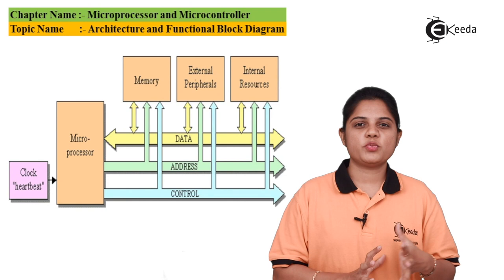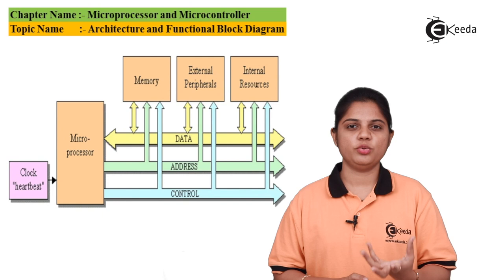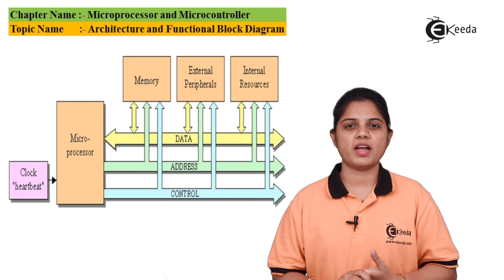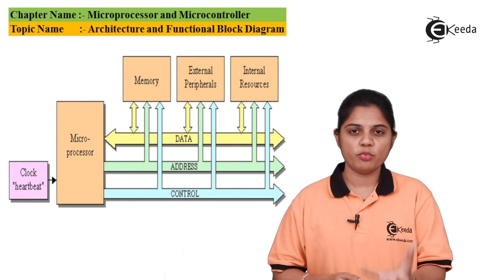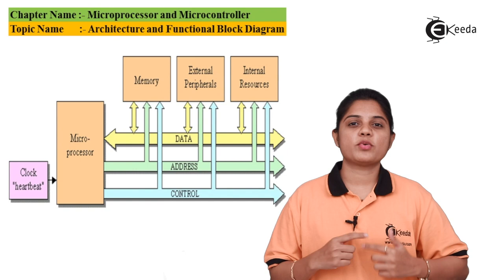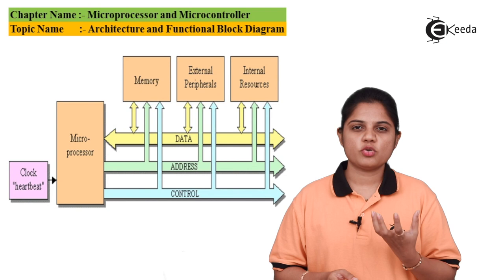Apart from this, we have three different blocks connected to it and those are external peripherals. That means if you are connecting any external device from where data can be fetched and a task executed on that data, or data can be provided to the external device connected to it. Then you have input resources — different types of input resources from where data can be taken to be processed.